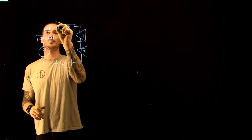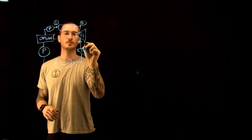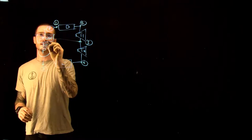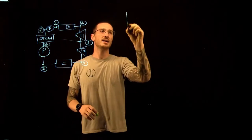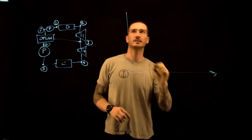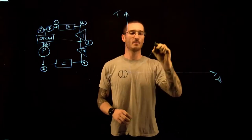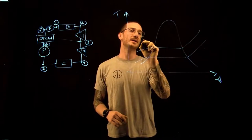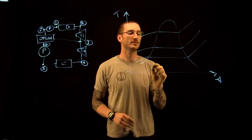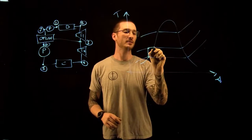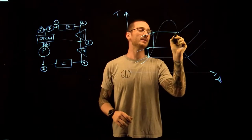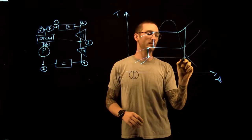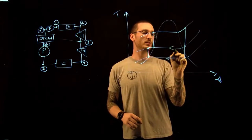We're going to label the state points 0.1 through 0.7. If we draw this on a TS diagram, we have our low pressure of 10 kPa, our extraction pressure of 1 megapascal, and our boiler pressure of 10 megapascals. We go through our first pump, get mixed, go to our second pump, heat up through the boiler, then through the first turbine, and then through the second turbine, with flow going in this direction.